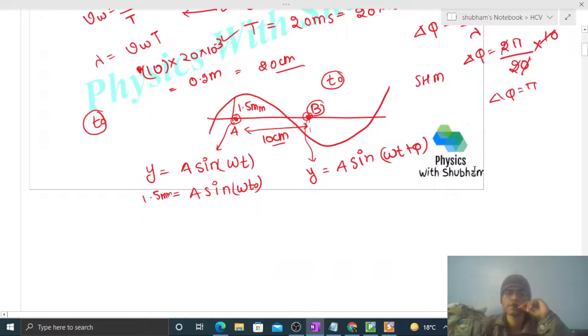So this will become pi. So the phase difference is pi. So we can say particle B's SHM equation will have phi equal to pi, so it will be minus of A sin omega t. So at t0 time, if we put t's value as t0, then its displacement will be A sin omega into t0. Its value is 1.5 mm.